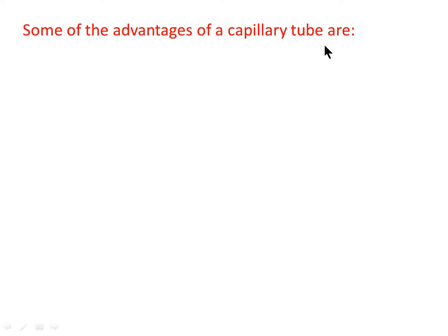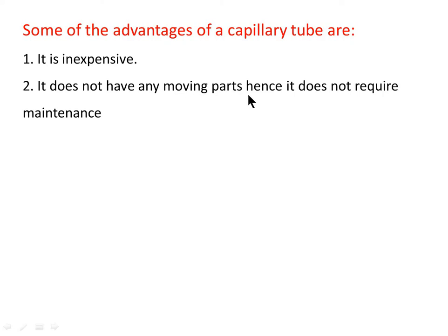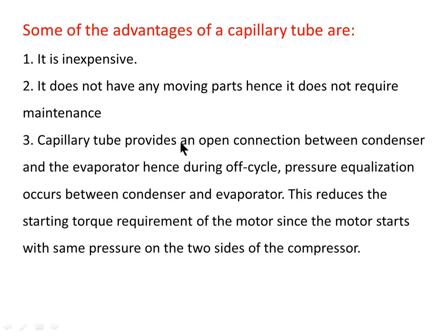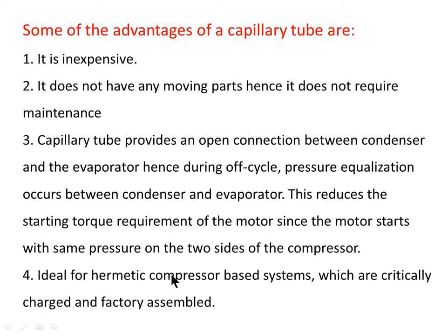Advantages of capillary tubes: they are inexpensive and have no moving parts, hence requiring no maintenance. A capillary tube provides an open connection between the condenser and evaporator, so during the off cycle, pressure equalization occurs between the two. This reduces the starting torque requirement of the motor, since it starts with the same pressure on both sides of the compressor. It is ideal for hermetic compressor-based systems that are critically charged and factory assembled.